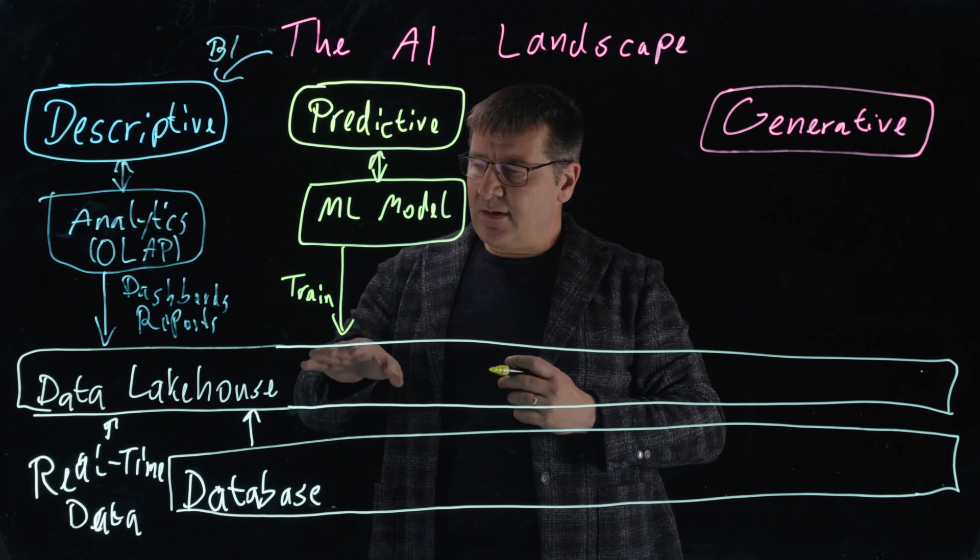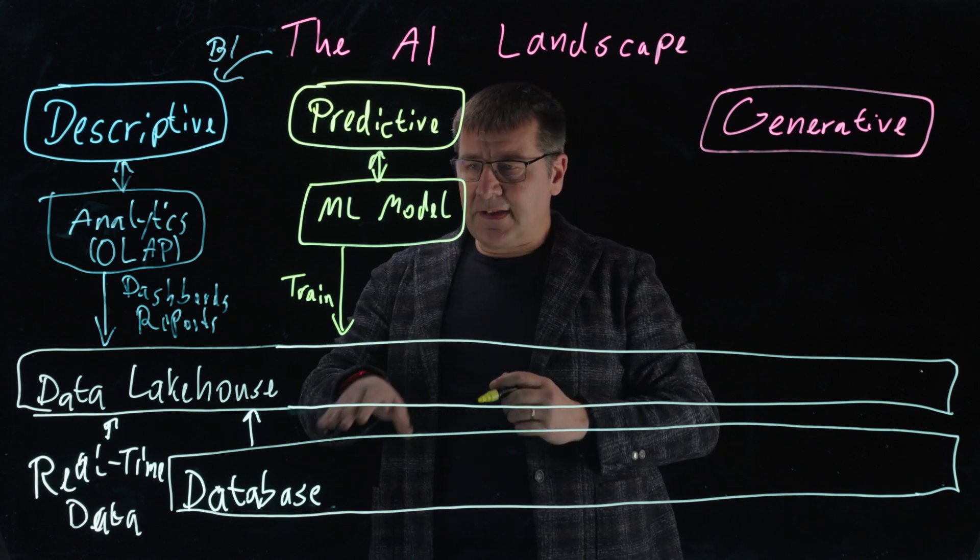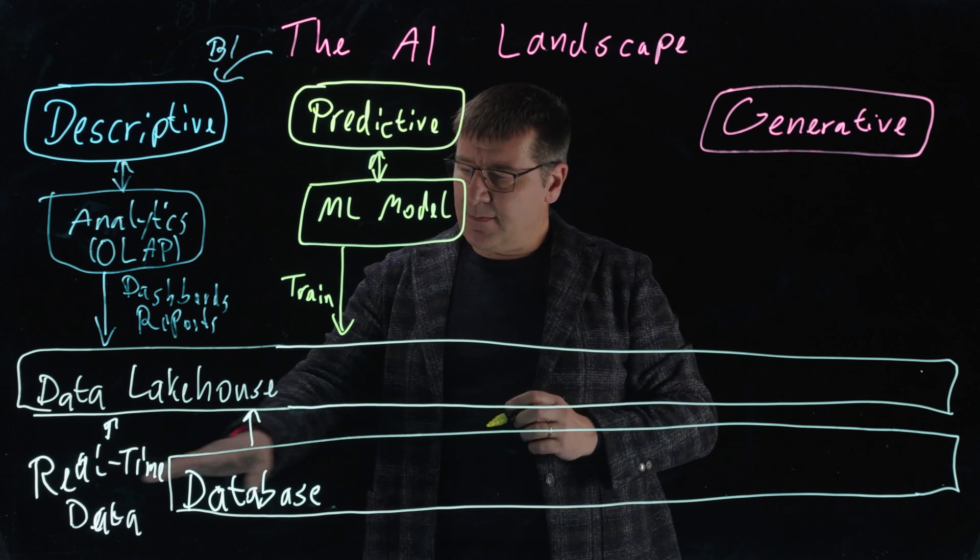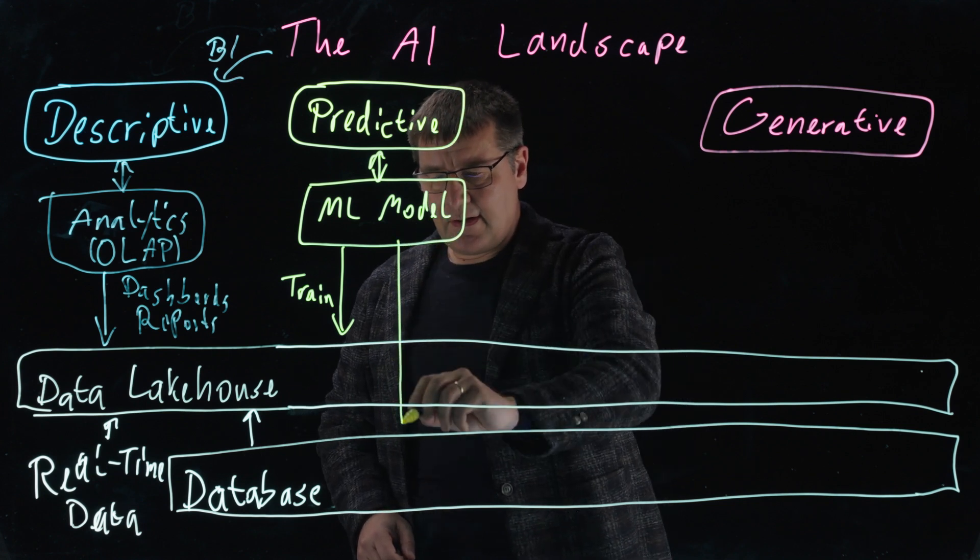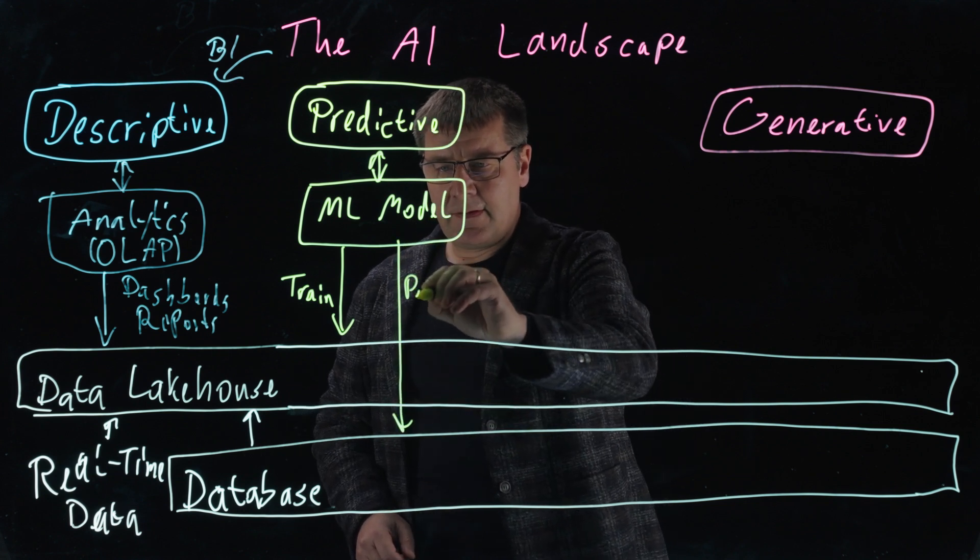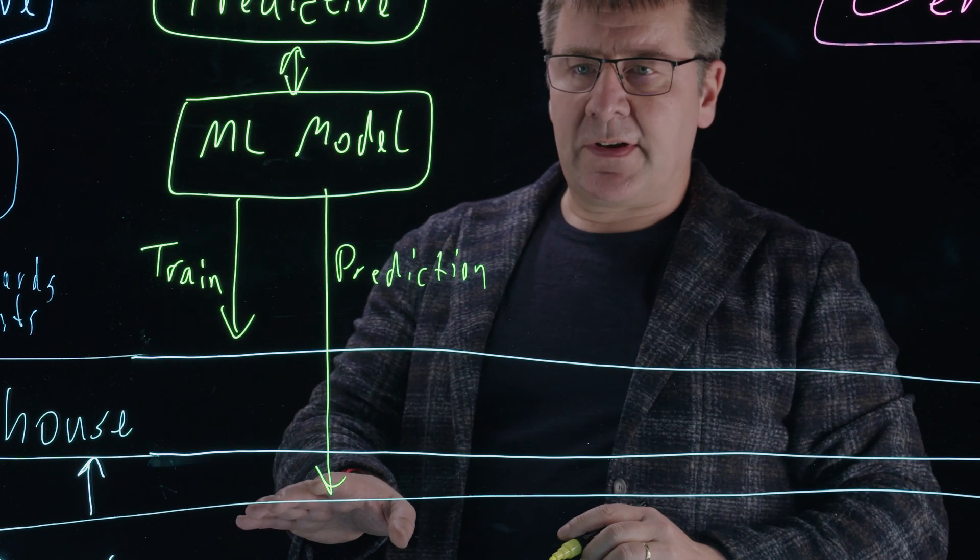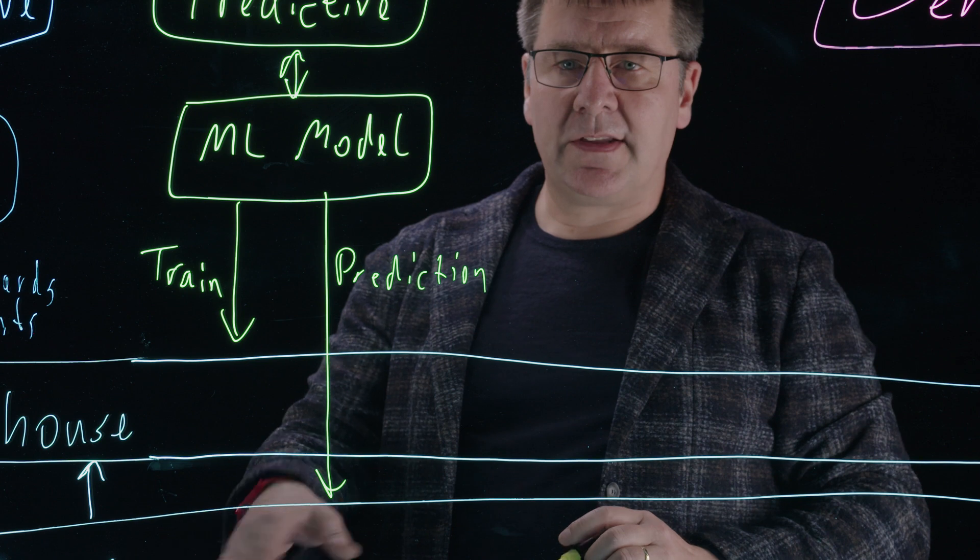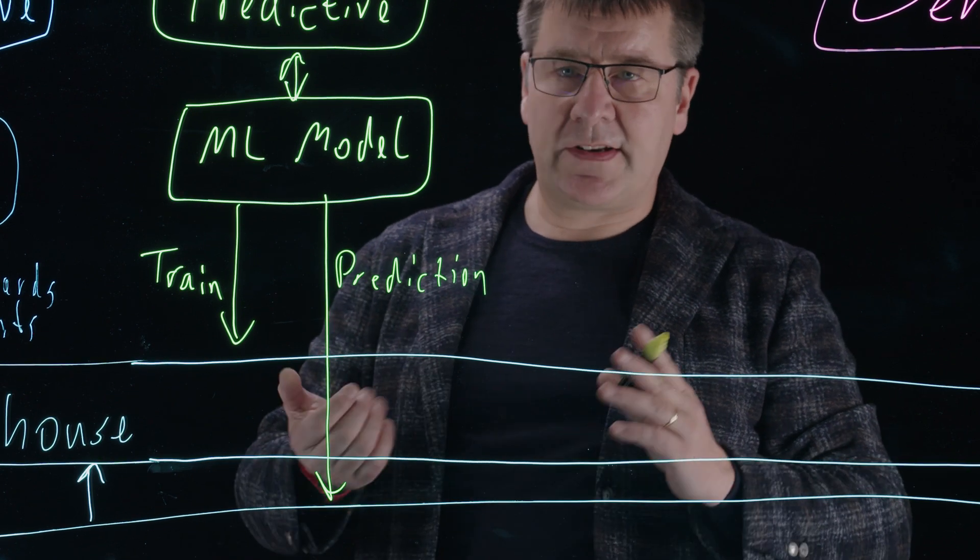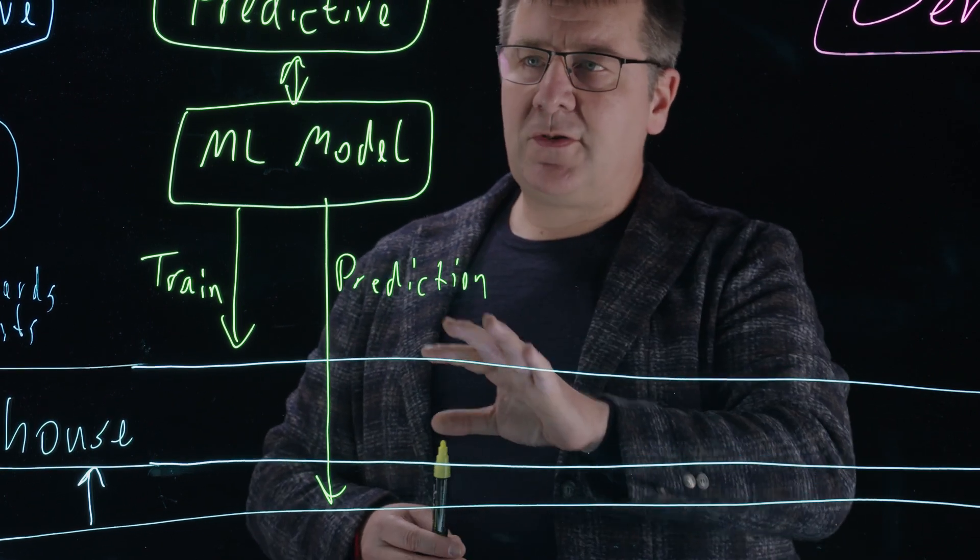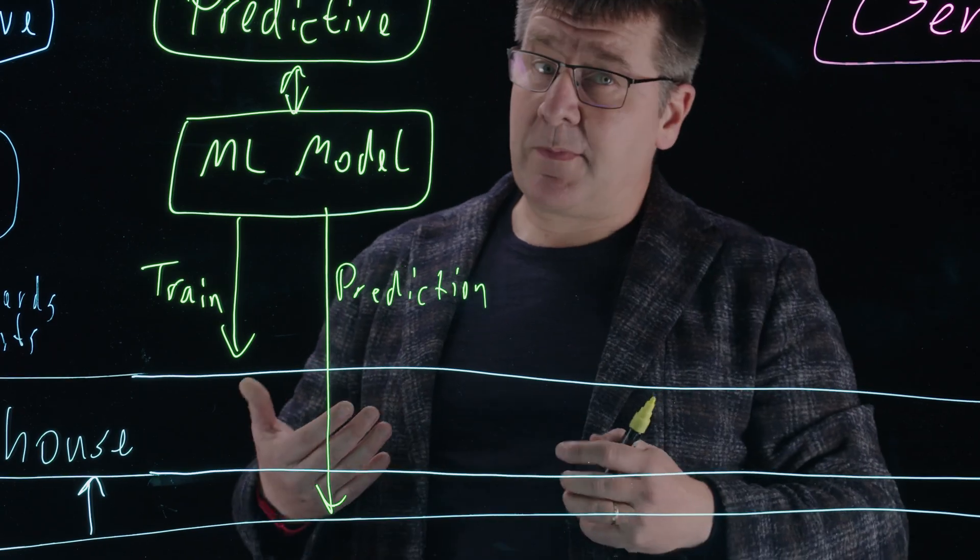This new data is not necessarily arriving here. That's actually where the other places here, real-time data and databases, matter again. Because the predictions are typically done when a new transaction is happening, like a certain credit card transaction. Then you need to use this model in order to figure out, is it maybe a fraud?